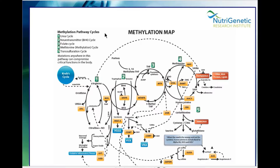Here's an overview of the methylation cycle and the pathways involved in methylation. There are some things that are really tightly connected to that. We have our urea cycle — number one. Number two on the far left is our neurotransmitter, the biopterin cycle. Number three is the folate cycle. Number four is the methionine cycle. And number five down here is our transsulfuration, or detox cycle.